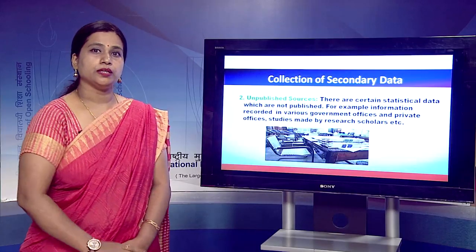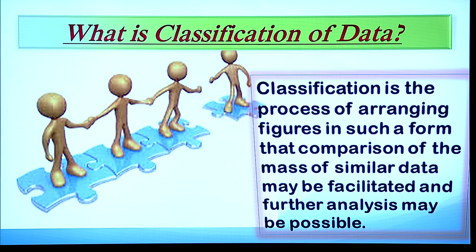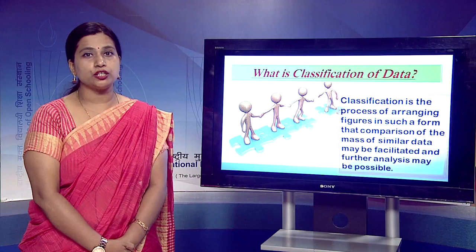Once we know about the sources of secondary data, we can discuss the concept of classification of data. Once data is collected — whether primary or secondary — if it is not organized, we cannot use it. Classification is the process of arranging figures in such a form that comparison of the mass of similar data may be facilitated and further analysis may be possible.